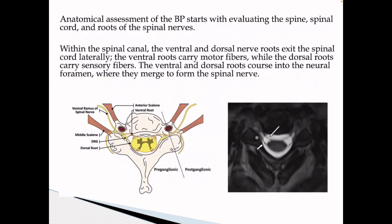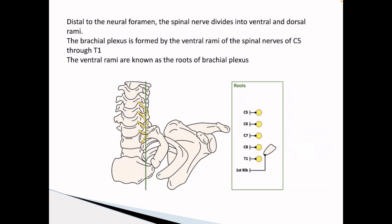Coming back to the normal anatomy. Anatomical assessment of the brachial plexus starts with evaluating the spine, the spinal cord, and the roots of the spinal nerves. Within the canal, the ventral and dorsal nerve roots exit the spinal cord laterally. The ventral roots carry the motor fibres while the dorsal roots carry the sensory fibres. The ventral and dorsal roots course into the neural foramen where they merge to form the spinal nerve.